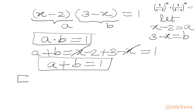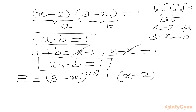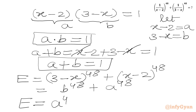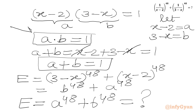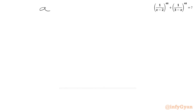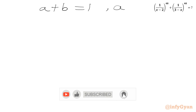Our expression E equals (3 minus x)⁴⁸ plus (x minus 2)⁴⁸, which becomes b to the power 48 plus a to the power 48, i.e., a⁴⁸ plus b⁴⁸. We now solve this using our system of equations: a plus b equals 1, and ab equals 1. We will square the first equation to start building up the powers.